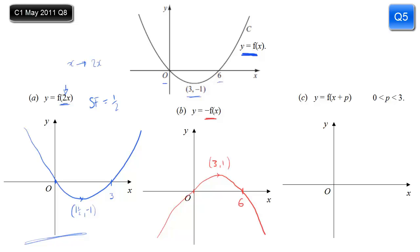Part C is worth the most marks. We have f of x plus p. When we add something inside the brackets, that's a translation parallel to the x-axis. To know the direction, we take the opposite sign to what appears: adding something positive means we move in the negative x direction — we move to the left. We're told p is greater than 0, so we are adding a positive value and it moves to the left.